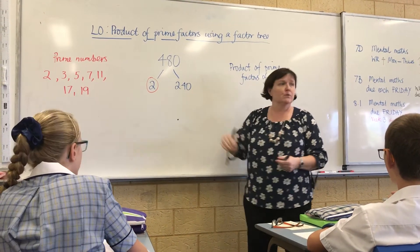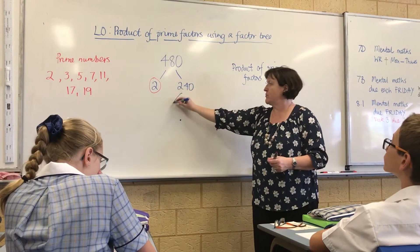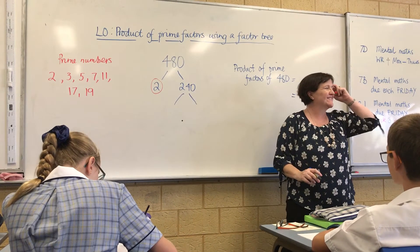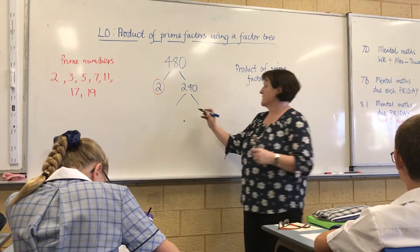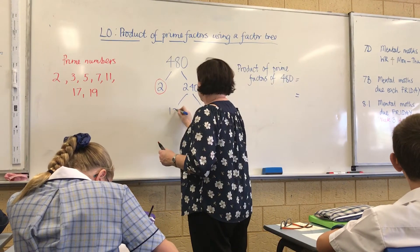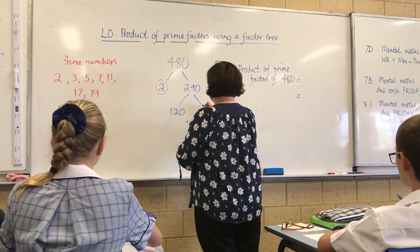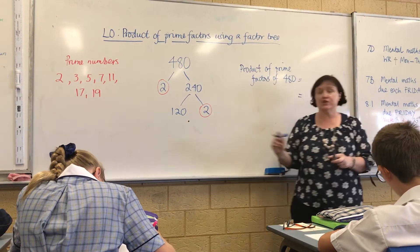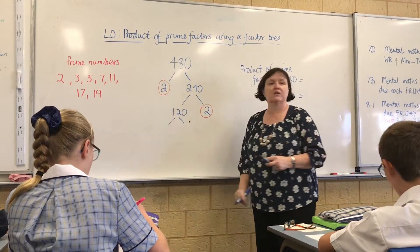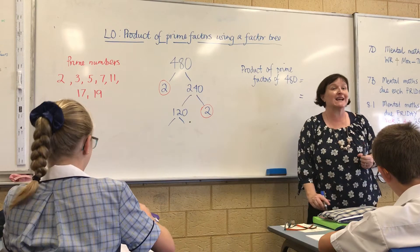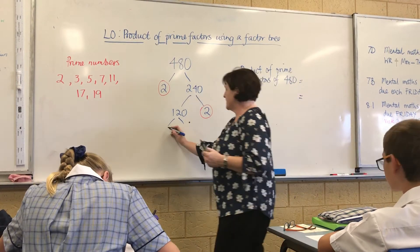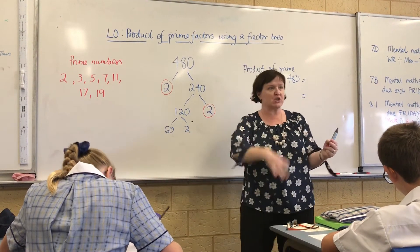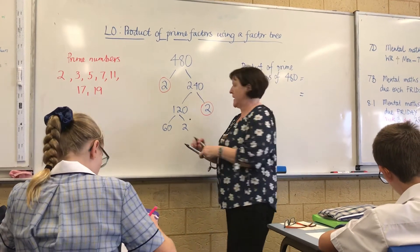We're at 240, so two branches. Poppy says 120 times 2 — good. So there's your prime as well. Now we've got to do 120 with two branches. Cassidy says 60 times 2. It's a good idea to keep doing times 2 until you can't do it anymore.